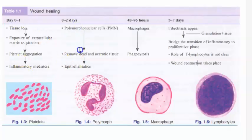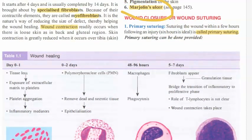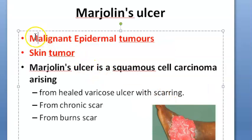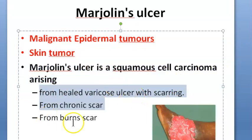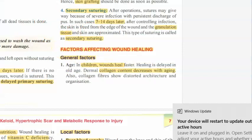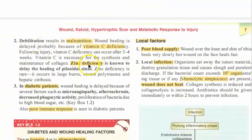Scar types: immature scar is red, raised, hard, and itchy; mature scar has fewer fibroblasts. Abnormal scars include atrophic scar, hypertrophic scar (within wound margins), and keloid (extends beyond wound margins). Marjolin's ulcer: any chronic scar — such as from burns — can undergo malignant transformation into squamous cell carcinoma. This is a malignant epidermal tumor arising from chronic scars.